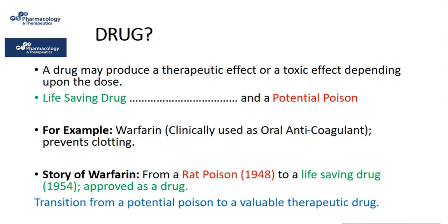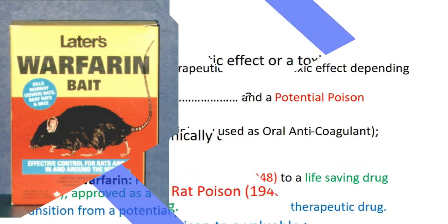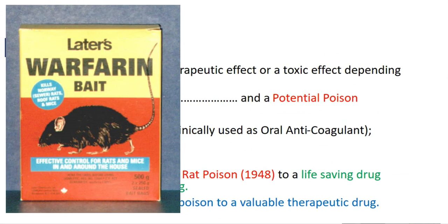For example, Warfarin is an oral anticoagulant. It is a life-saving drug. However, it can become a potential poison if overdosed. Interestingly, Warfarin was found to be an excellent rat poison in the late 1940s because it caused internal hemorrhage in rats, resulting in their death.